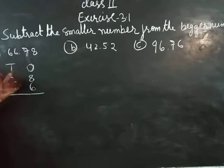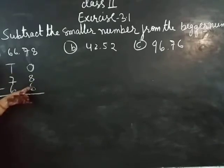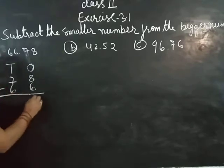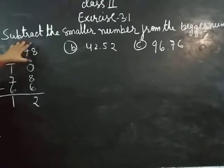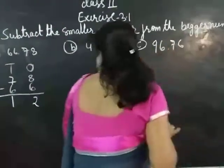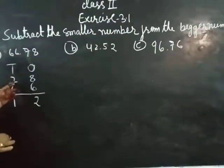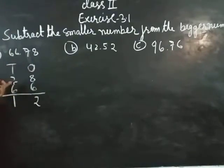Here we have 8. Then subtract the smaller number from the bigger number. The bigger number is 78 and the smaller number is 58. So, 8 minus 8 equals 0, and 7 minus 5 equals 2.